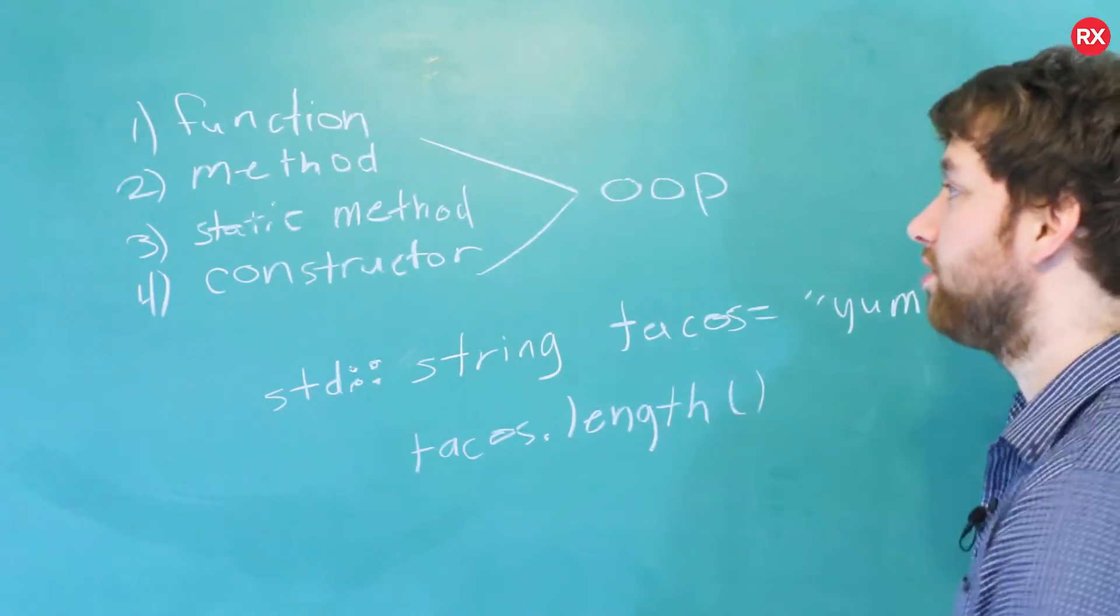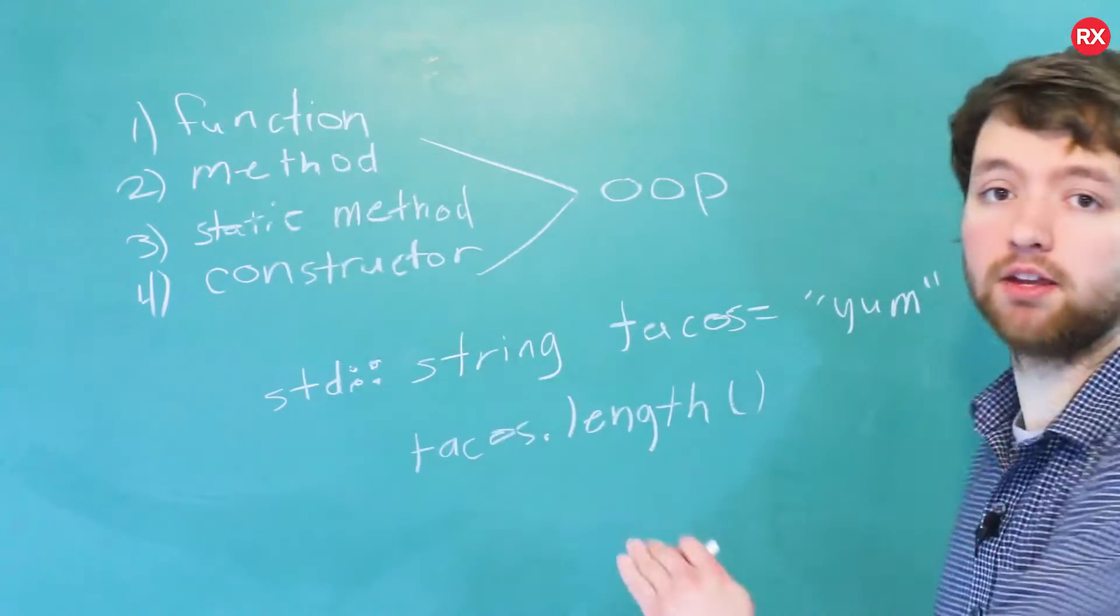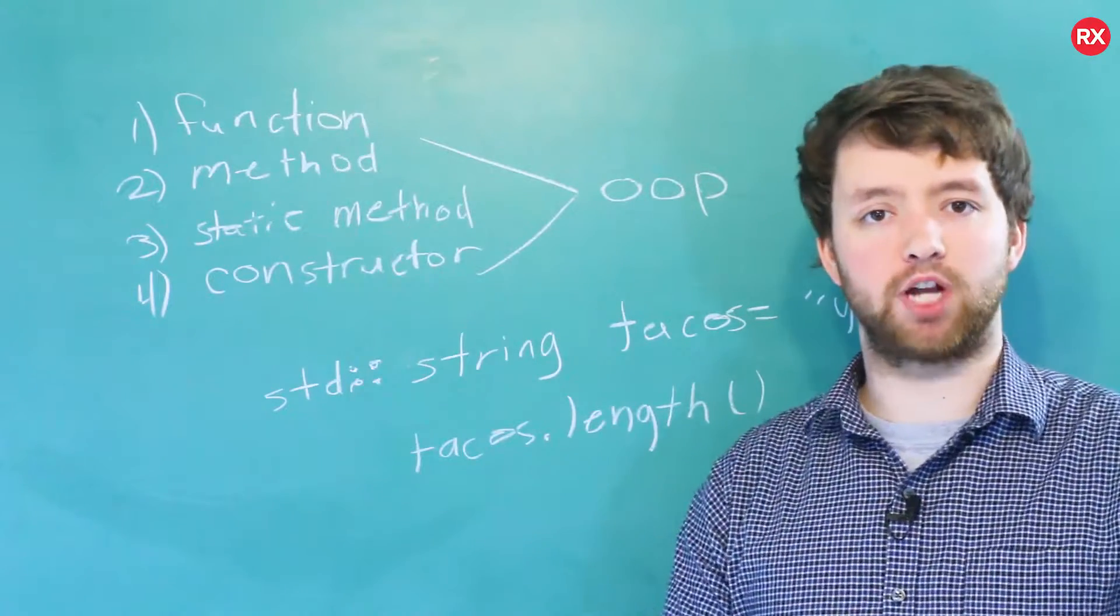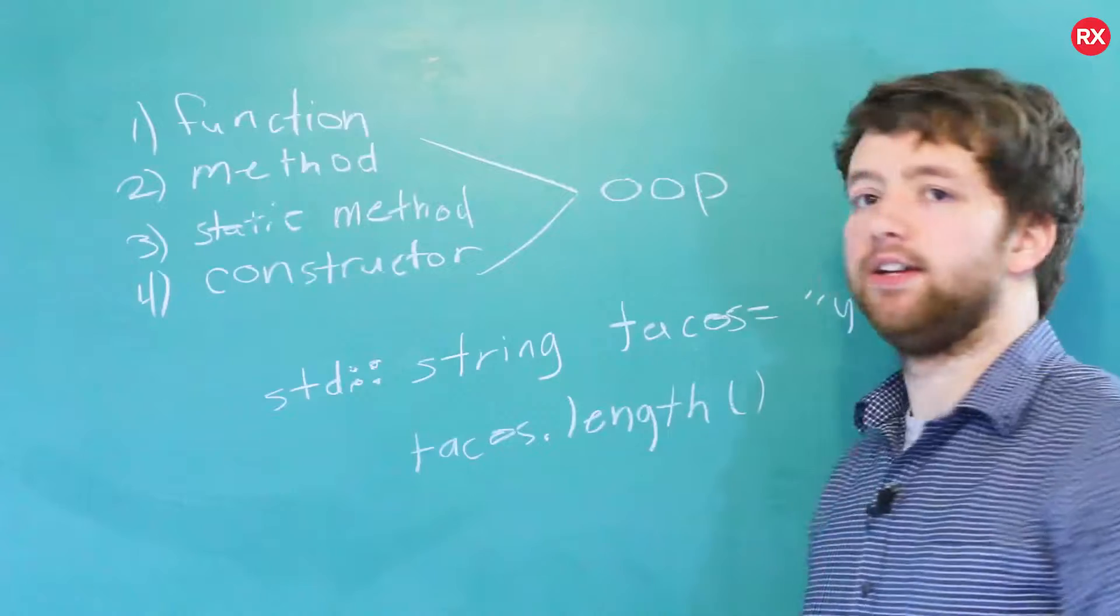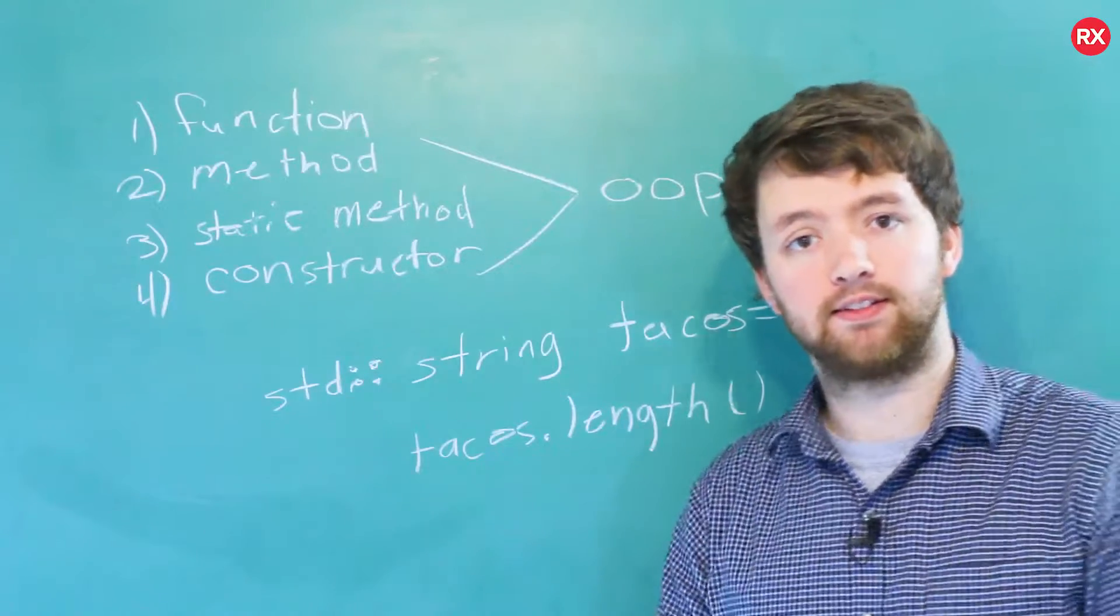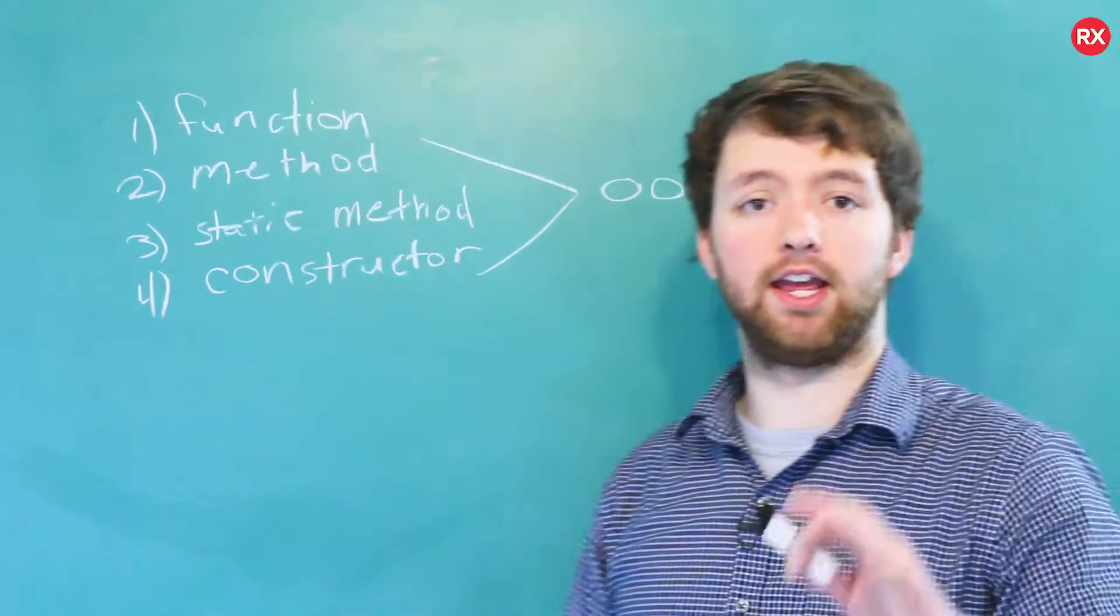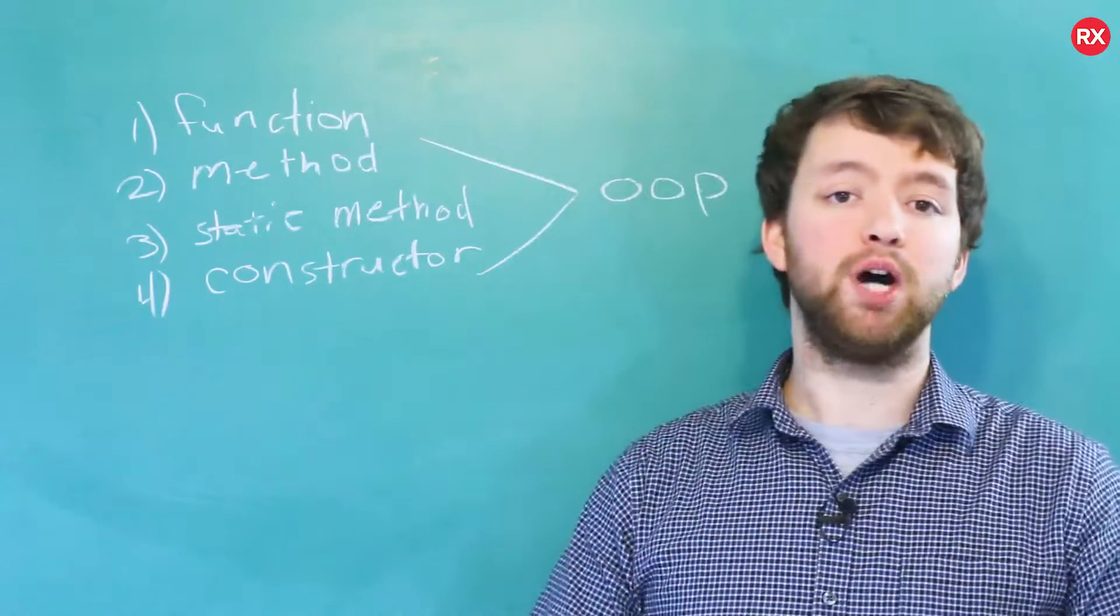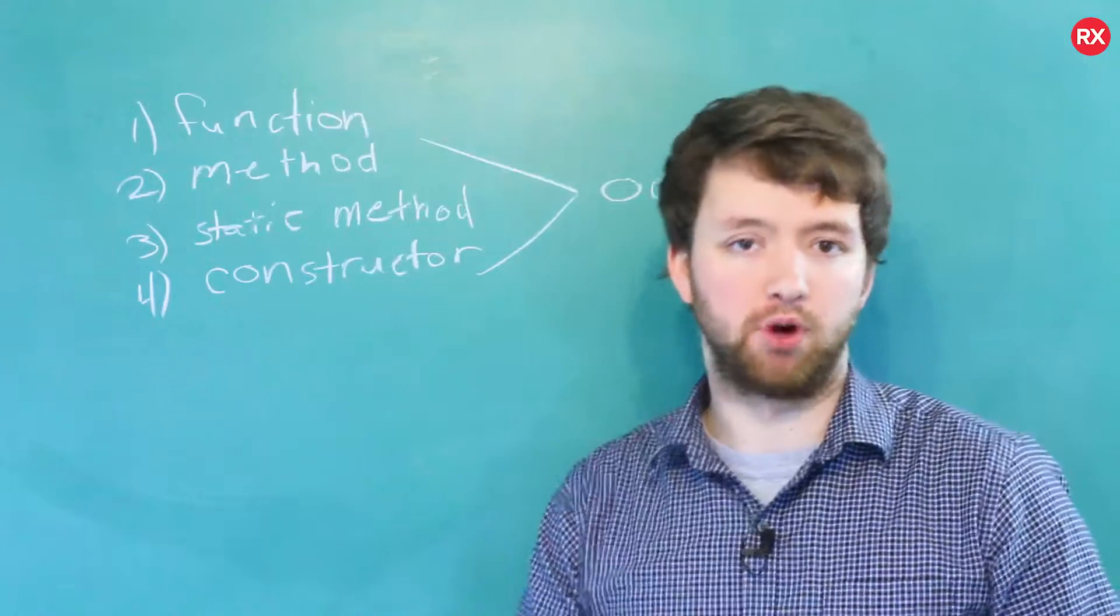Now the difference between a method and a static method is that a method is attached to an object. A static method is attached to a class. The difference between a class and an object will become crystal clear when we talk about classes and objects here pretty soon.